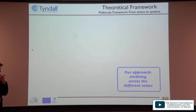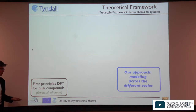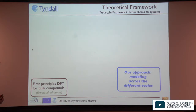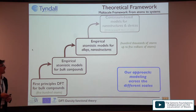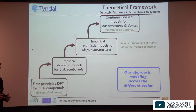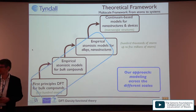Our approach involves modeling across different scales. Starting with first-principles or DFT calculations as a benchmark for empirical models and a source of material parameters, we establish empirical atomistic models for bulk systems, benchmarked against DFT. We then have empirical atomistic models for alloys and nanostructures, and we are also working on connecting these empirical methods to continuum-based models for nanostructures and devices. I will focus on the first three steps.